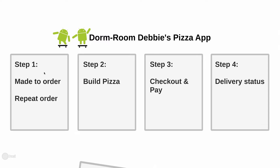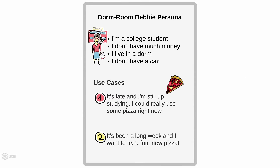These are the four steps that will help us complete the task of dorm room Debbie going from being hungry to being satisfied with pizza. It's important that we start with these high-level steps before we think about any of the details. As part of the wireframing process, we need to remind ourselves of our persona and their use cases.